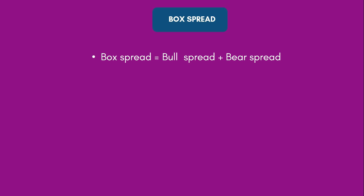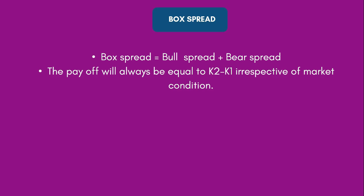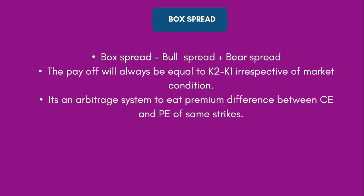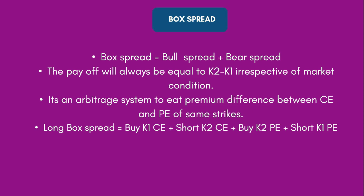The amount will be very small but the probability of winning is 100%. Box spread is bull spread and bear spread combined. When you combine bull spread with bear spread, the combination is called box spread. As the name suggests, it has four strikes — four corners of a box — and is an arbitrage system where you make risk-free profit. The profit is the difference between two strikes K2 and K1, irrespective of market condition. It is an arbitrage system to capture premium difference between call and put of the same strike.